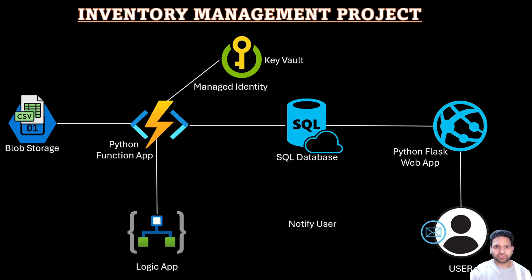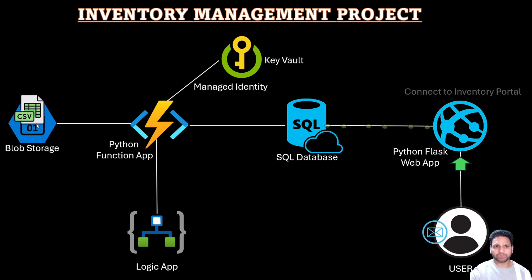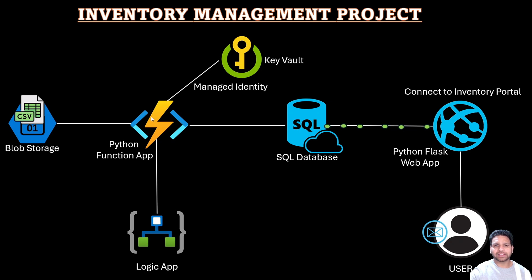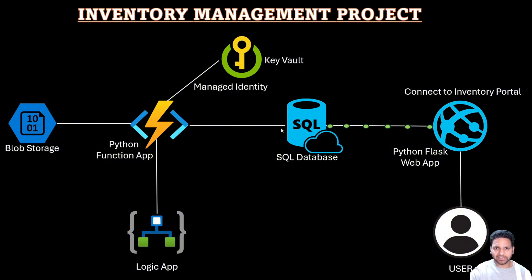To summarize the workflow so far: once the CSV file is uploaded into the storage account, a blob trigger will automatically fire, and the Python function will read the contents of the CSV file, fetch the credentials from the Key Vault, then connect to the SQL database and update it.